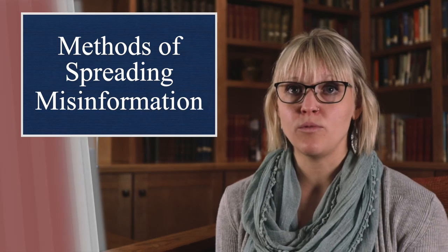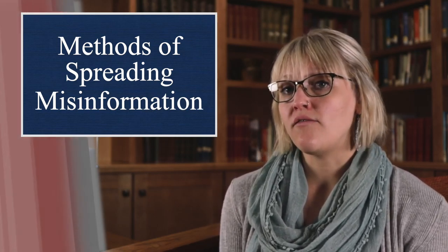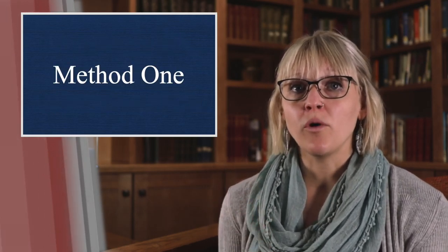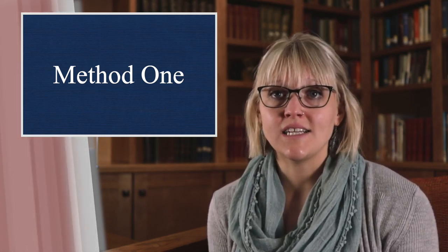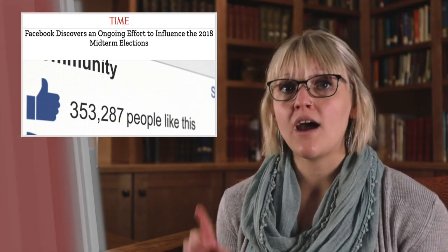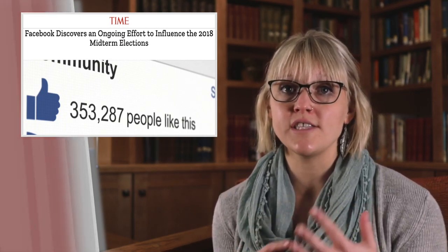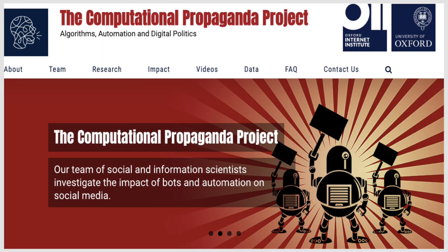Of course we have many recent examples of disinformation as well, and they might be better understood by breaking them into five methods. Method one: foreign actors set up fake social media sites to incite and troll. These tactics were also emulated by domestic sites in the 2018 midterms, with Facebook accounts and pages that falsely indicated widespread popularity for the ideas they wanted to promote. The University of Oxford has a computational propaganda project worth visiting at the link included below, covering how bots are used to spread disinformation internationally.